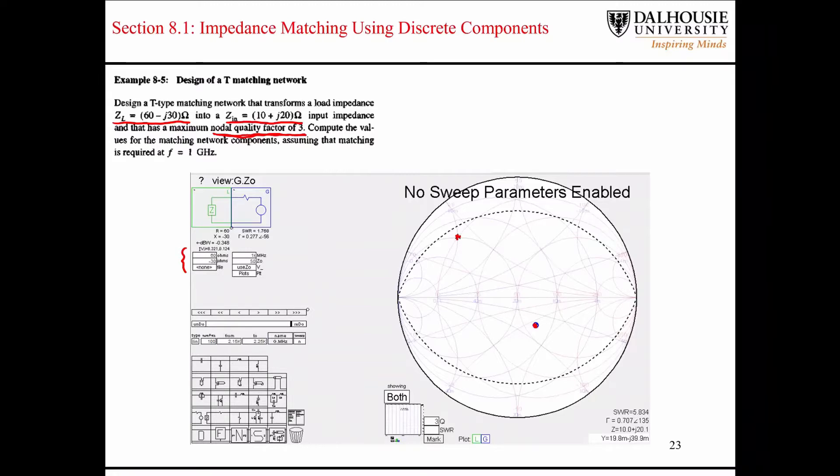The first thing you want to do is recognize the possible rotations that you can make. We can rotate upward like this, we can rotate downward like this, or we can rotate along the constant conductance circles like this. So the first step is to decide what path you want to take.